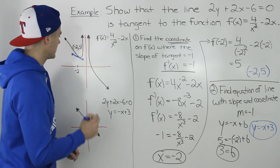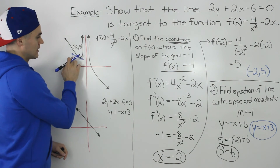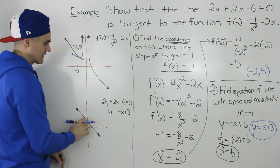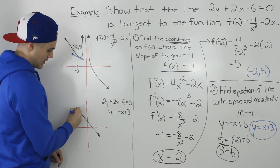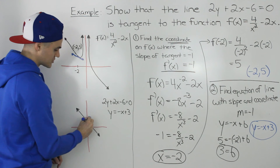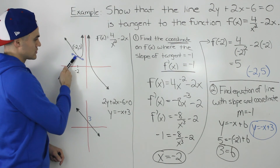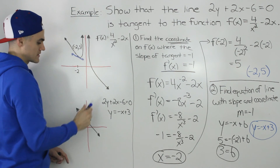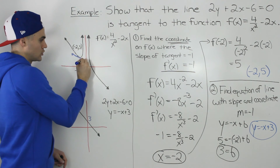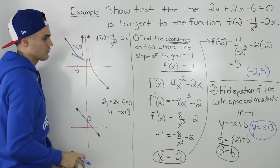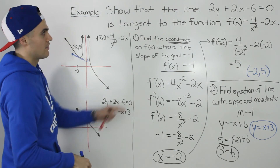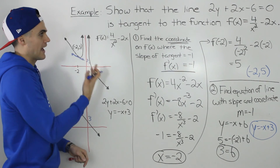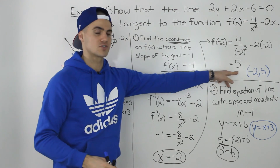So we proved it. This tangent — redrawn in blue — has the equation y equals negative x plus 3, which is the exact same as the given line. This line has a slope of negative 1 and goes through a y-intercept of 3. The tangent on this function at coordinate negative 2 and 5 also has a slope of negative 1, and if you extend it, it goes through that y-intercept of 3 as well. We proved that y equals negative x plus 3 is tangent to this function at the point negative 2 and 5.